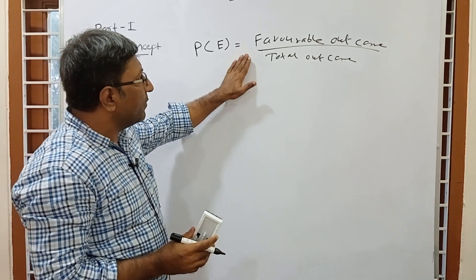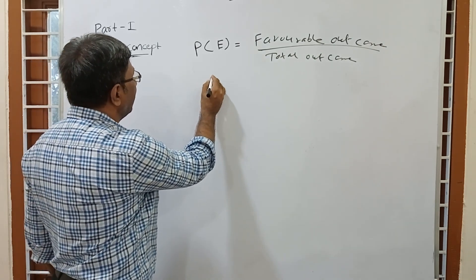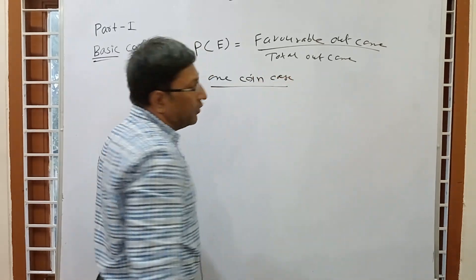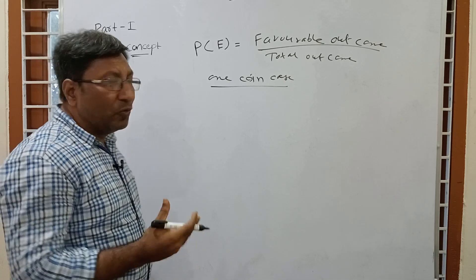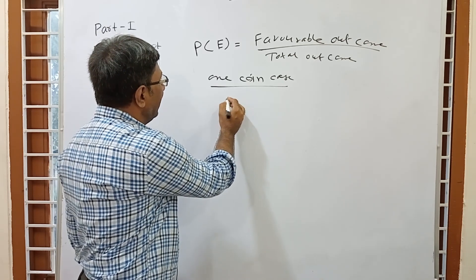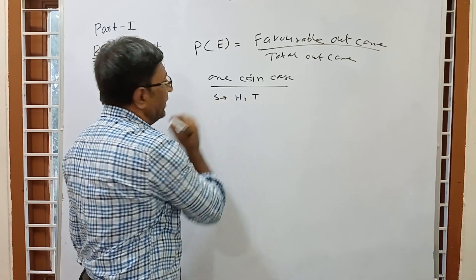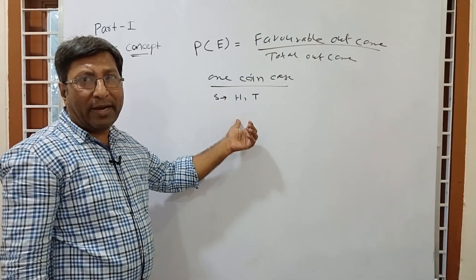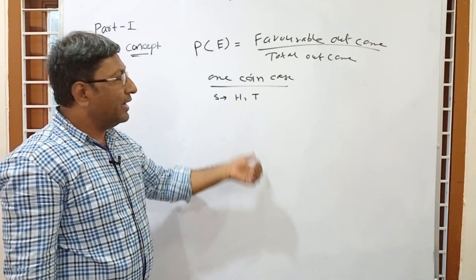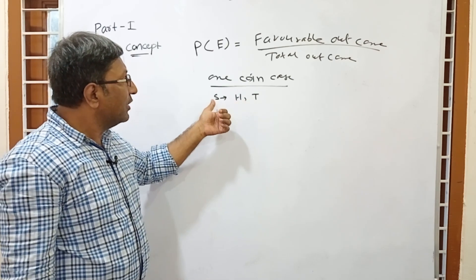Favorable outcome is related to an experiment. Suppose you take the example of one coin case — you throw one coin. A coin has head and tail. If we throw the coin we will get head or tail. This is called the sample space. Throwing a coin is an experiment. The result may be head or tail, so head and tail are the sample space — that is, the total outcome.